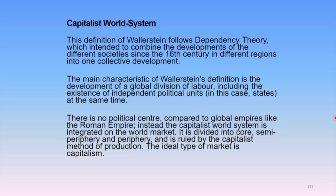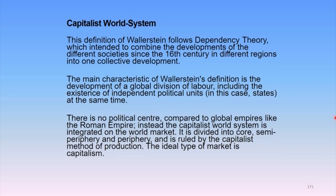The main characteristic of Wallerstein's definition is the development of a global division of labor — an international division of labor — including the existence of independent political units, for example states, at the same time. There is no political center compared to global empires like the Roman Empire. Instead, the capitalist world system is integrated on the world market. More than political or cultural integration, Wallerstein was emphatic on how different countries are economically integrated into a single unified whole. That is how he tried to capture the process of globalization.